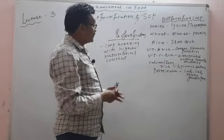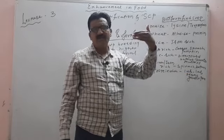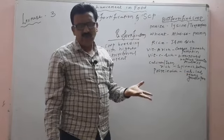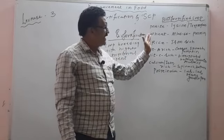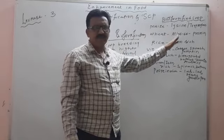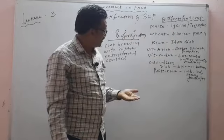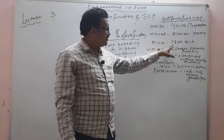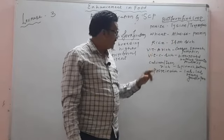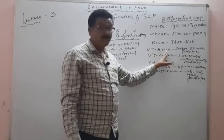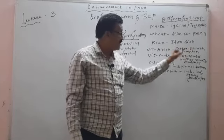In wheat, we have lysine and tryptophan concentration — this is where bio-fortification is applied. In rice, we have protein concentration and iron-rich variety. Vitamin A-rich plants are carrot, spinach, and pumpkin.